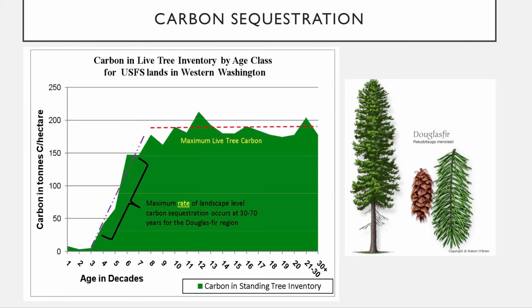Forests are probably the greatest carbon sequestration systems we have, but the ocean is also a huge carbon sink. However, injecting carbon into the ocean can change acidification — you can get algae blooms and jellyfish blooms — changing the structure of the ocean, so that's not necessarily a great solution. Soil is also a big carbon store, as are other greenhouse gases. Up in the tundra, now that it's thawing, huge amounts of methane are being released, which is a serious problem.